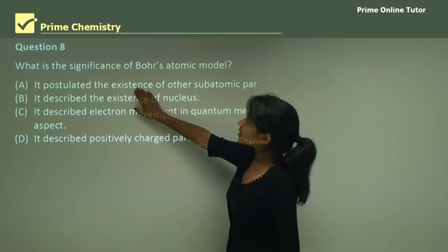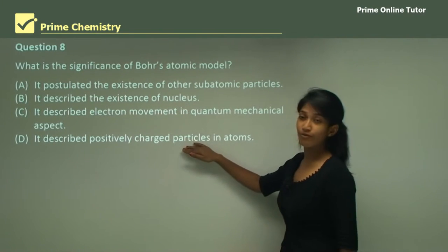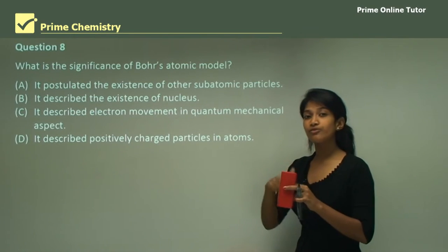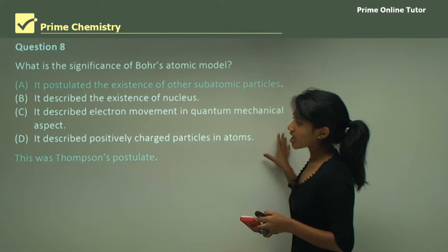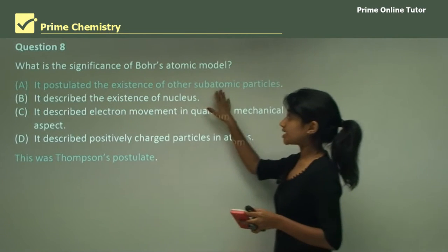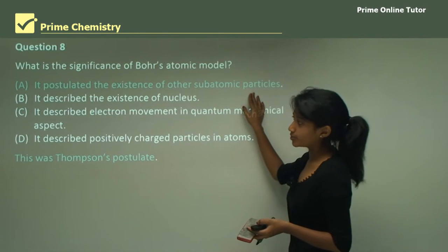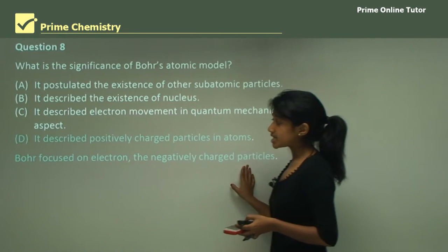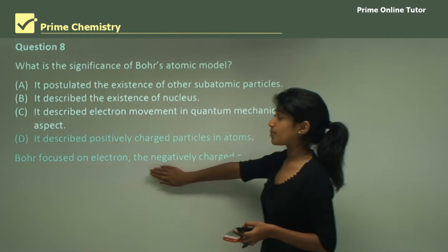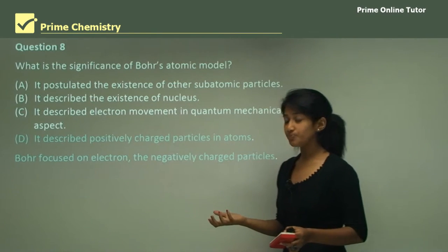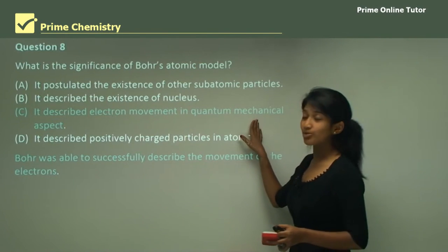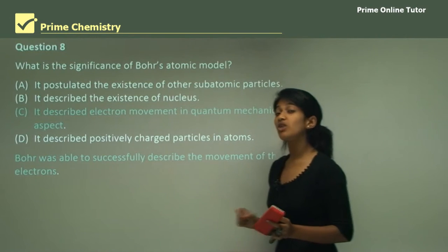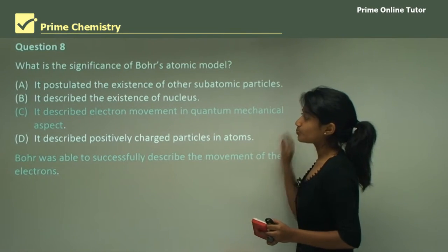Question eight: what is the significance of Bohr's atomic model? Bohr worked with quantum physics and defined the electron's orbit around the nucleus. Option A — Thomson's postulate about subatomic particles — is incorrect. Option B, the existence of the nucleus, was more Rutherford. Option D, describing positively charged particles, was mainly Rutherford. Option C says it described electron movement in quantum mechanical aspects — that is correct, because Bohr was able to say how electrons moved in certain energy levels and how they did not radiate energy within that energy level. So C is the correct answer.